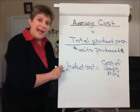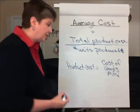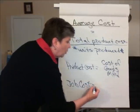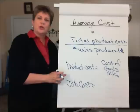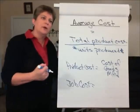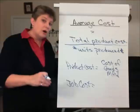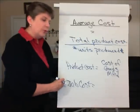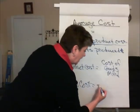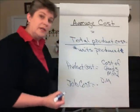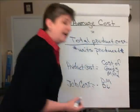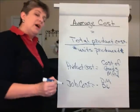Now in a job order costing system, what we're going to be looking at is the cost of the job for the period. We may want to calculate an average cost of units produced for a particular job, so that we know how to price out those units on a per unit basis. In a job cost, we're going to be charging the actual cost of direct materials and the actual cost of direct labor incurred for that job.